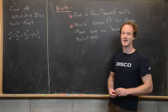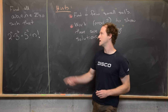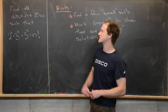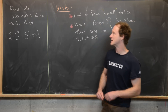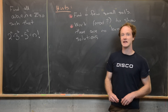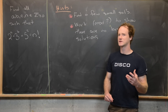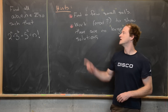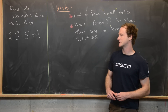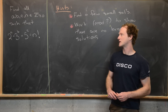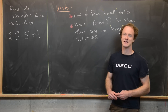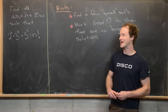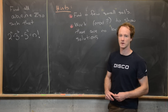We want to find all non-negative integers a, b, c, and n — in other words all natural numbers — such that 2^a + 3^b + 5^c is equal to n factorial.